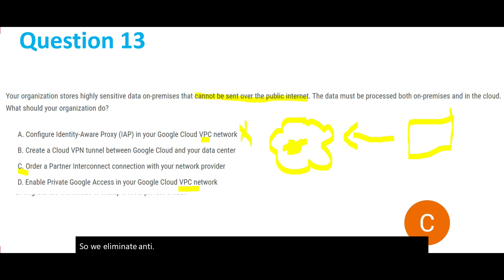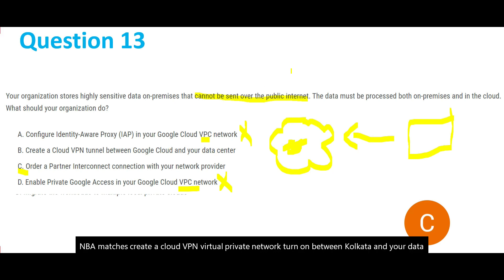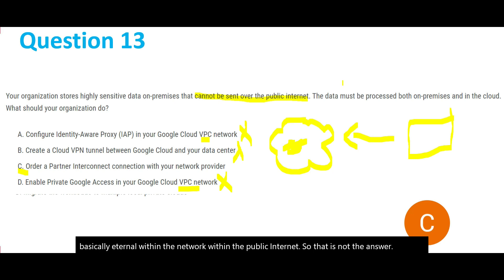Option B is to create a Cloud VPN, or virtual private network, tunnel between Google Cloud and your data center. This is not the answer because a VPN tunnel also utilizes the public internet — it is a tunnel within the public internet. Since the data cannot be sent over the public internet, B is not the answer. Therefore, C — order a Partner Interconnect connection with your network provider — is the answer.